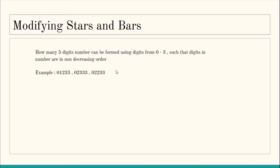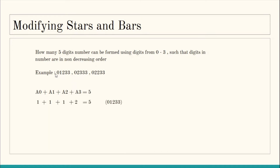Since we need to make a total of five digits, think about what the number of stars should be. A five-digit number can be represented using the equation a0 + a1 + a2 + a3 = 5, where the total number of stars is five, because the total sum of digits is five. Here a0 represents the count of 0s in the number, a1 is the count of 1s, a2 is the count of 2s, and a3 is the count of 3s. For example, if a0=1, a1=1, a2=1, a3=2, that means there is one 0, one 1, one 2, and two 3s — and their sum is of course five.